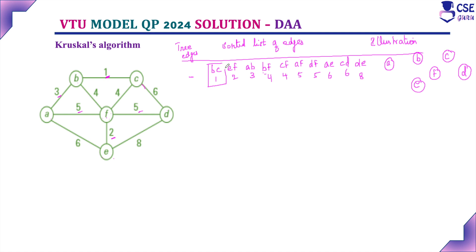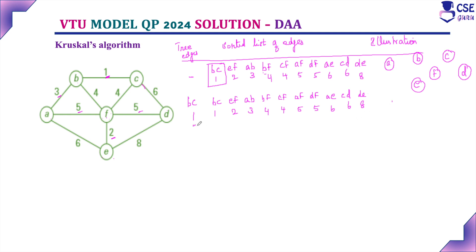Now consider the first edge: BC with weight 1. If you include this edge, it obviously does not form any cycle since it is the very first edge being added. So we include edge BC with weight 1.